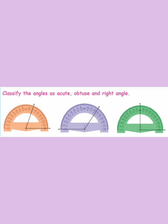The first type is the acute angle, which is less than 90 degrees. The second is the obtuse angle, which is greater than 90 degrees. The last one is the right angle, which is exactly 90 degrees.